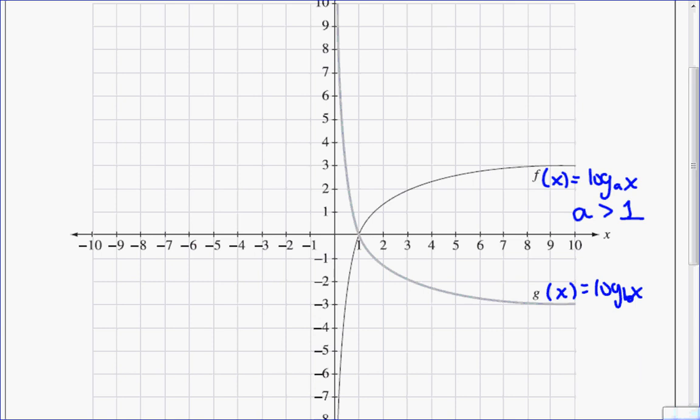Now g(x) is a decreasing graph, and I know that this happens because the base is a number that is in between 0 and 1. It can't equal 0 or 1, but I know it is a base in between 0 and 1. So now that I know those facts,